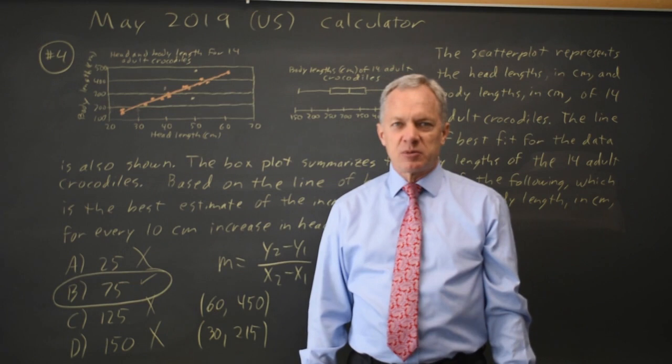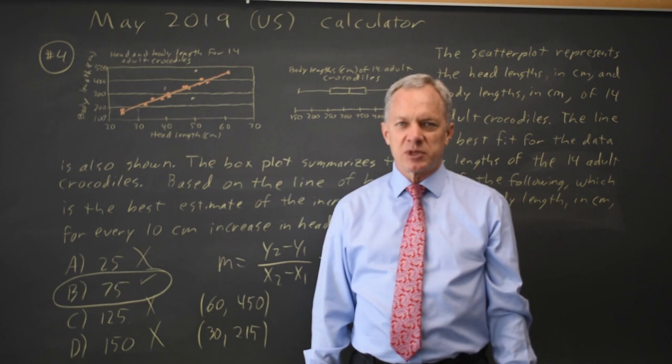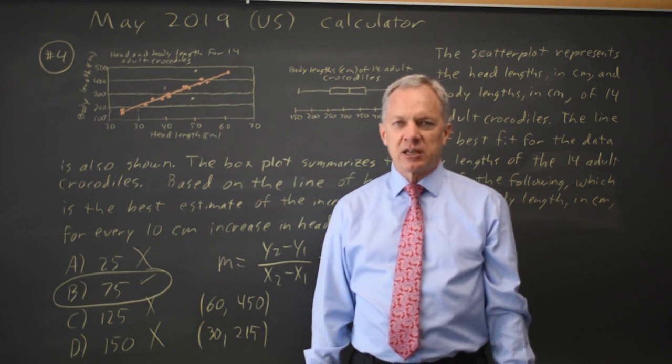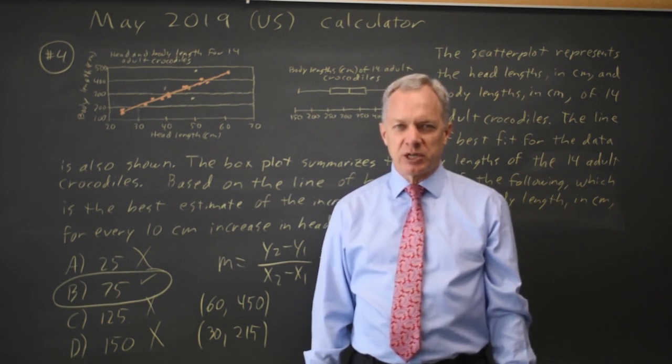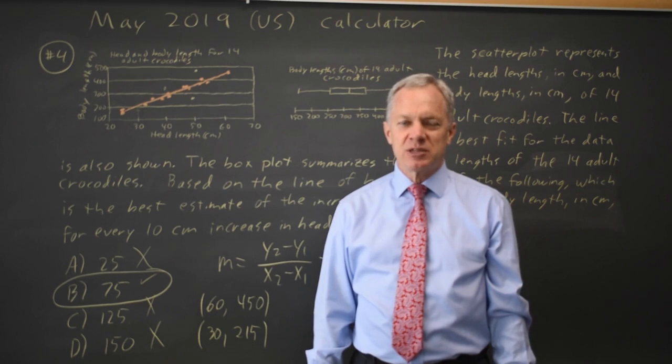College Board often asks about the slope of your line of best fit, so make sure that you remember to use the line of best fit rather than the points, and to adjust for the wording of their question. In this case, increase for 10 centimeters would be 10 times the slope. Come back soon for my next video. With math, there's always more.